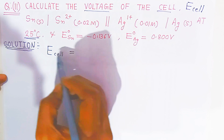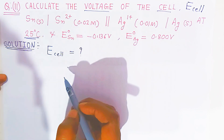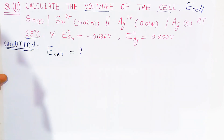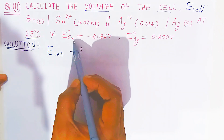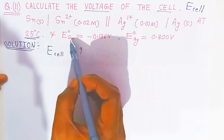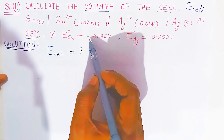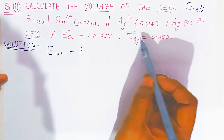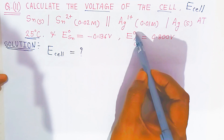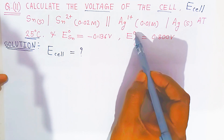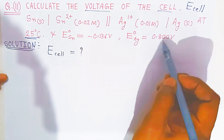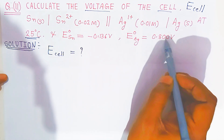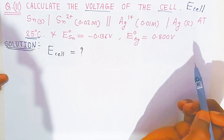The standard electrode potential of stannous is given as minus 0.136 volt, and the standard electrode potential of silver is given as 0.800 volt.